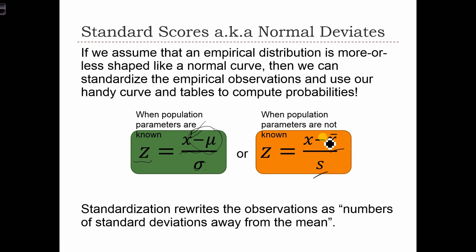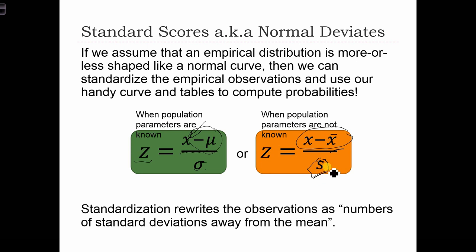Essentially what this does is rewrite raw data values into numbers of standard deviations away from the mean. You can see that X minus x-bar is just a deviation away from the mean, and when we divide by the standard deviation, Z is the difference expressed in terms of the number of standard deviations — the deviance of X from x-bar expressed as the number of standard deviations away from the mean.